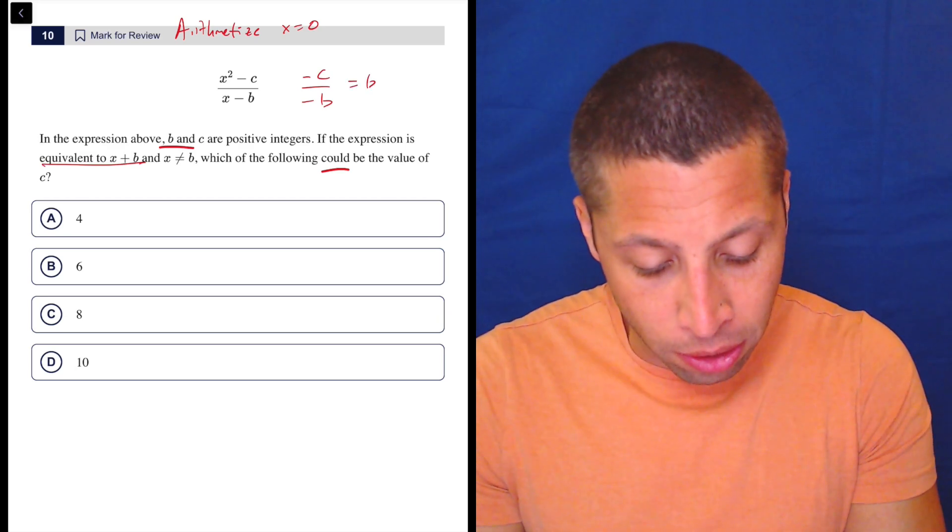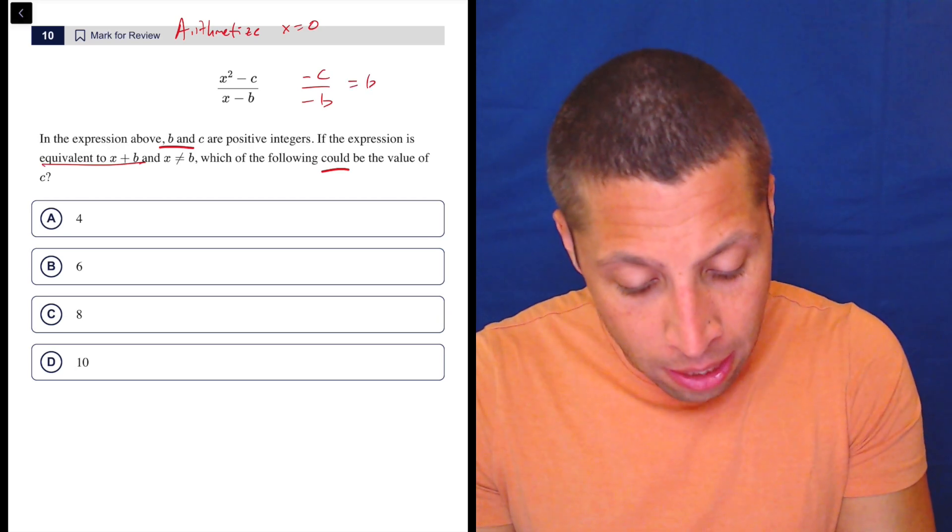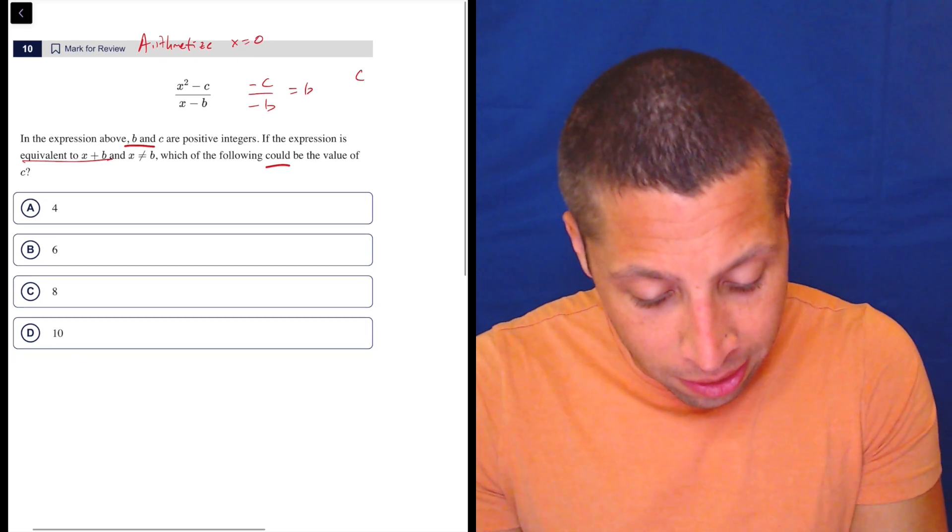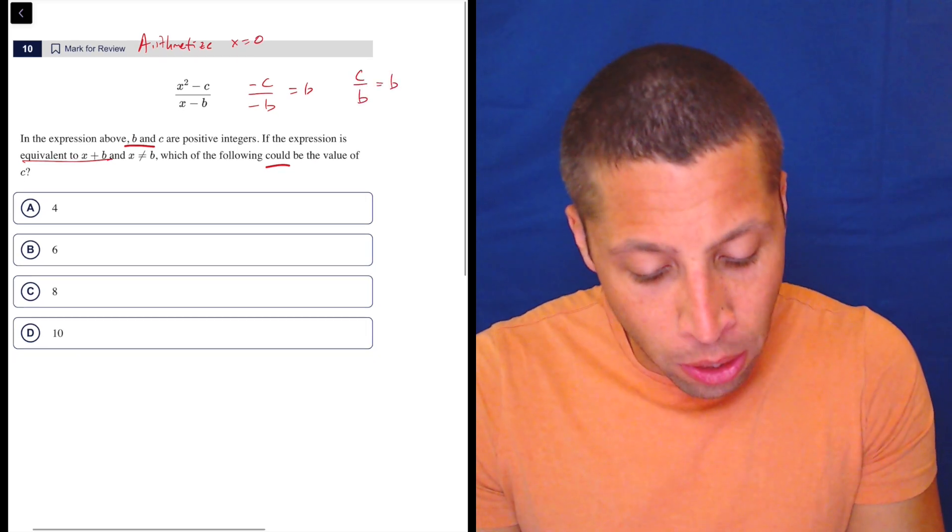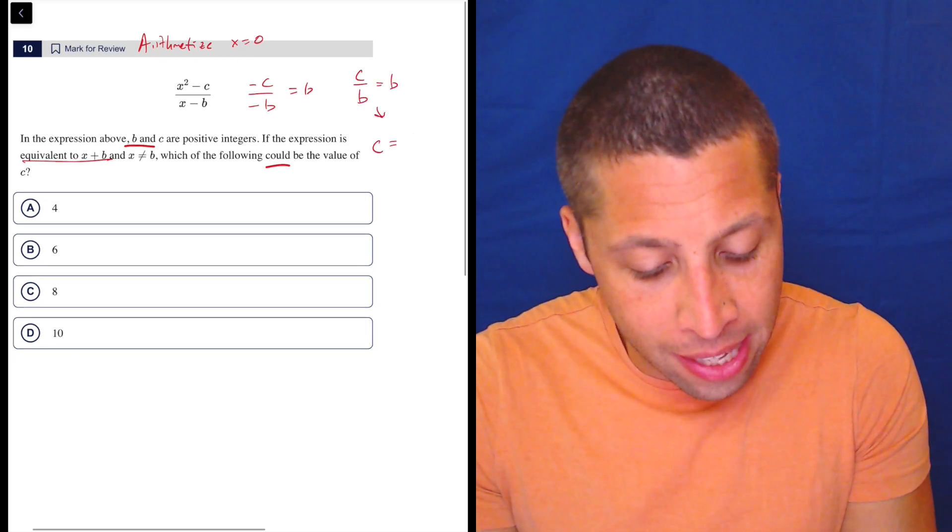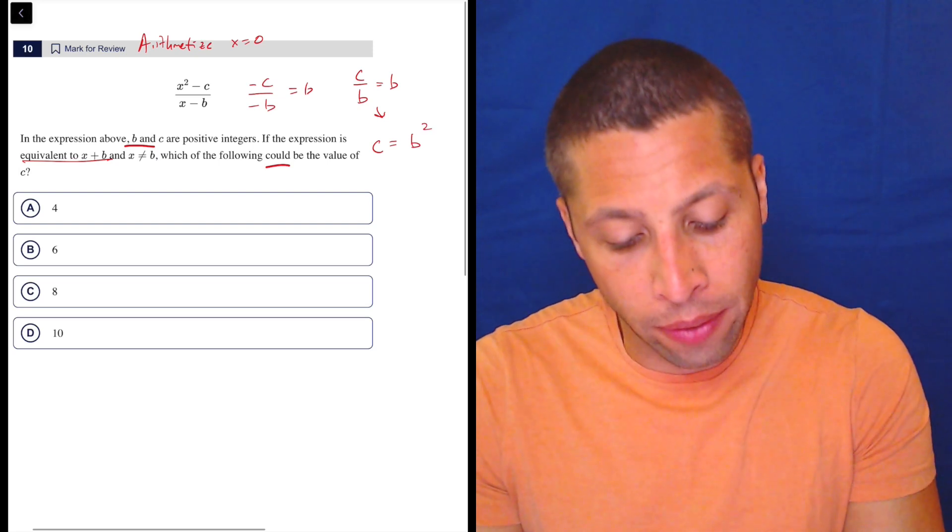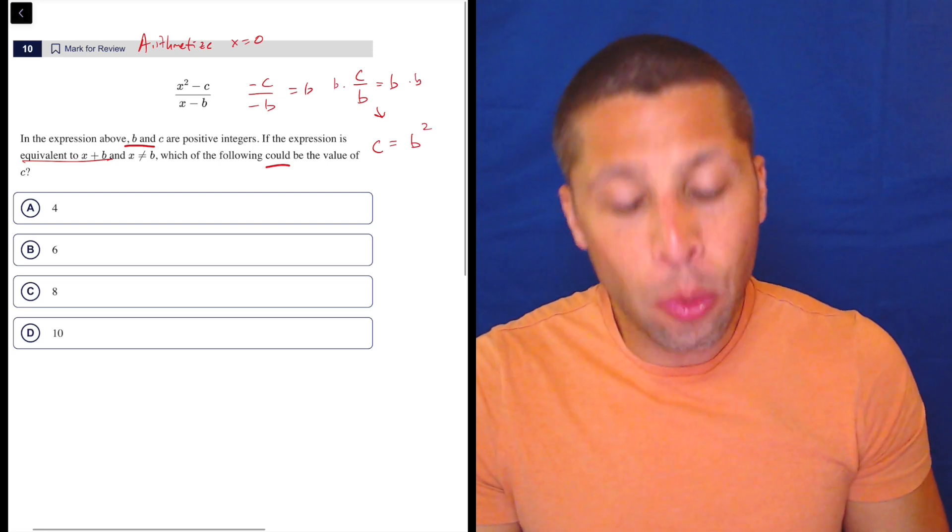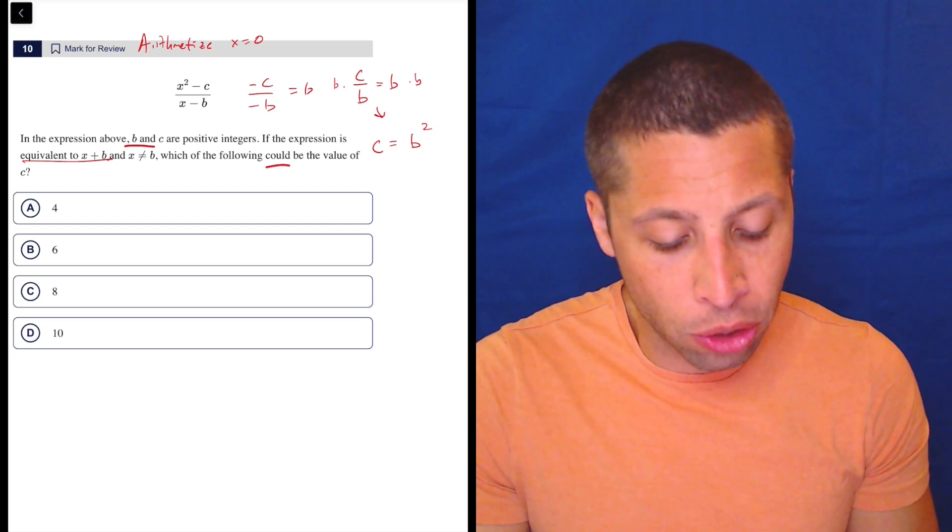So the negatives cancel. So we end up with C, let's running out of space, C over B is equal to B. Or another way to put that is C is equal to B squared. If I multiply both sides by B, we get rid of the fraction, and we also understand the relationship.